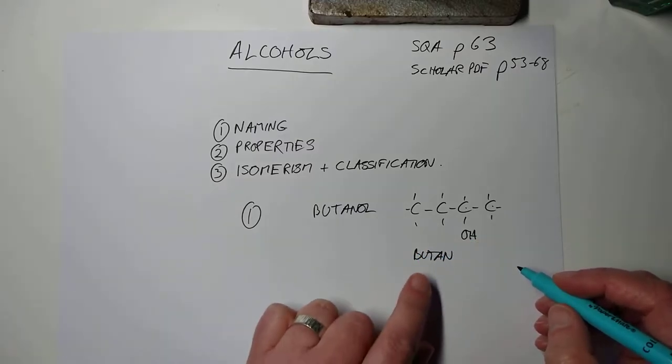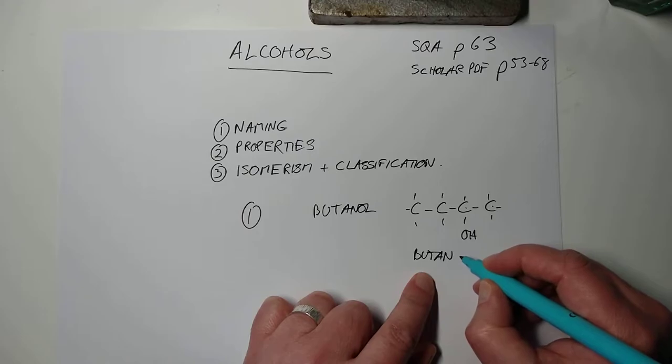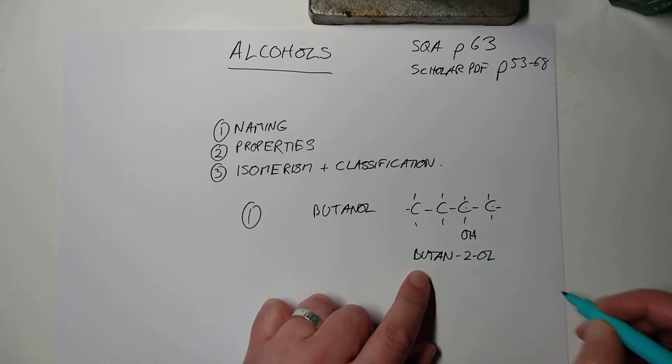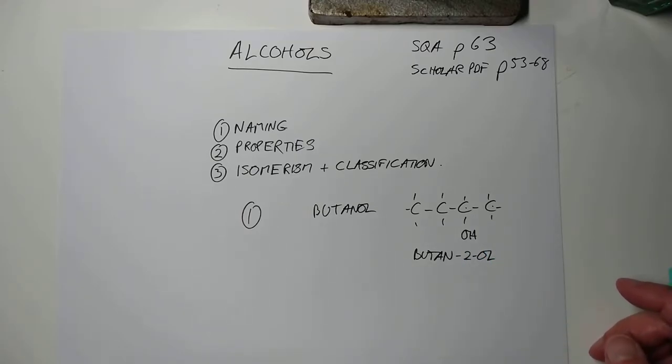And I know for things like ethanol and methanol, you don't need to put the numbers in. There's nothing to stop you. It's only ever going to be ethan-1-ol, of course. You can probably pause the video and figure out why ethan-2-ol doesn't exist. So this is butan-2-ol.